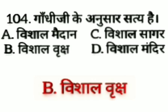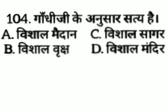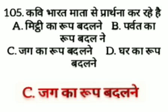Gandhiji ke anusar satya hai — option A: vishal maidan, option B: vishal vriksh, option C: vishal sagar, option D: vishal mandir. The answer is option B, vishal vriksh. Gandhiji ke anusar satya ek vishal vriksh hai.